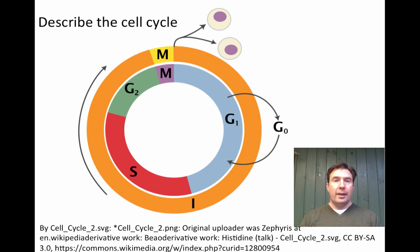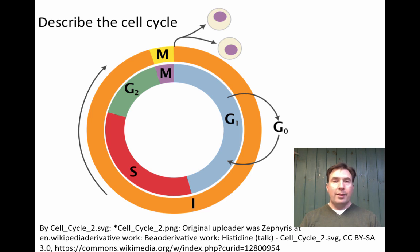Now let's look at the overall cell cycle. The cell cycle has different phases — looking at the outer circle, there is the M phase and the I phase. M stands for mitosis and I stands for interphase. Mitosis covers only the division portions, and the full cell cycle is the combination of both M phase and interphase. It's important to note how small M phase is compared to I phase, meaning cells spend very, very little time actually dividing in their life cycle.